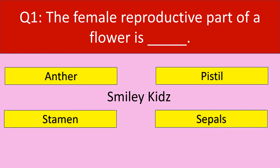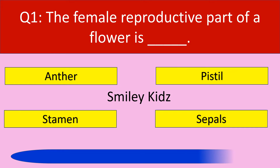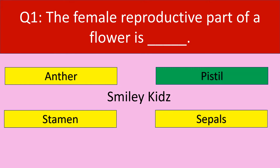Question number 1. The female reproductive part of a flower is — your options are anther, pistil, stamen, sepals. Your time starts now. The correct answer is pistil. Pistil is the female reproductive part of a flower.